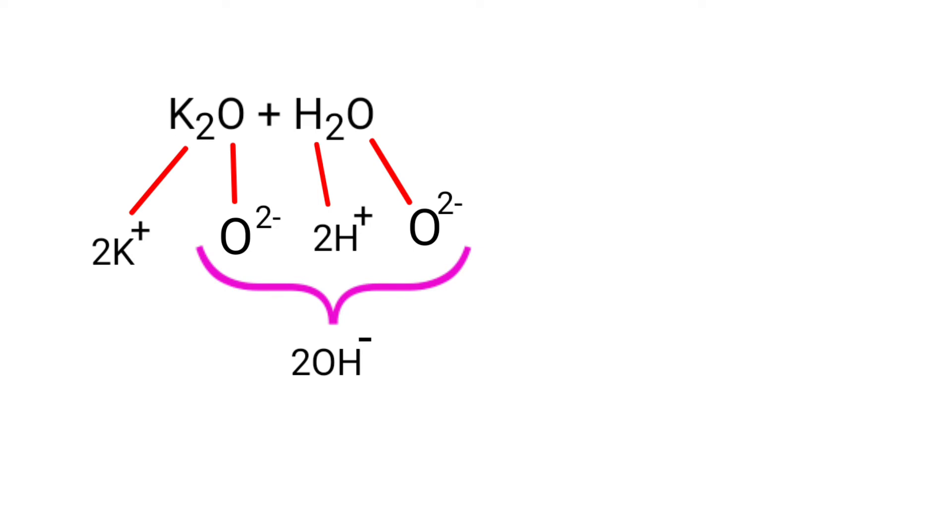Then the oxygen ions and hydrogen ions combine to form two hydroxide ions. Next, two potassium ions and two hydroxide ions combine to form two potassium hydroxide molecules.